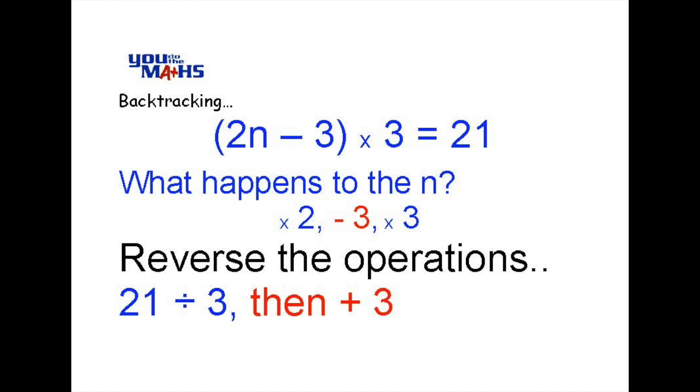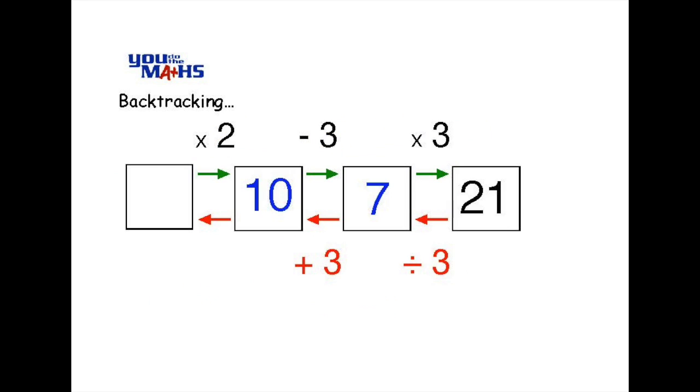The next operation going in reverse order is take away 3. So the opposite of that is to add 3. So again we apply this to the boxes. We put the plus 3 below the second arrow and moving right to left 7 plus 3 is equal to 10.